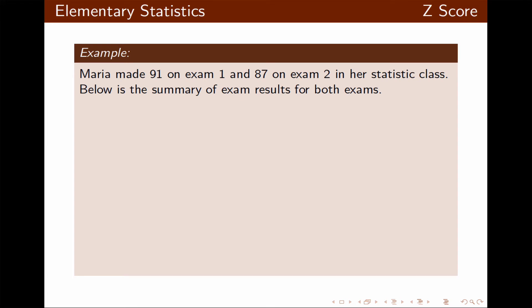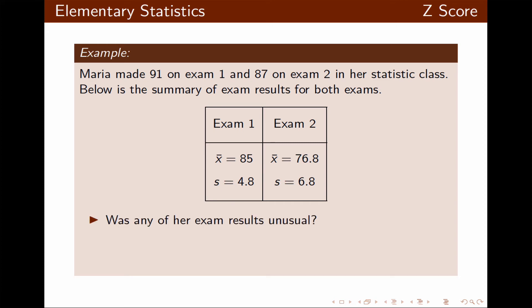Maria made 91 on exam 1 and 87 on exam 2 in her stat class. Below is a summary of exam results for both exams. Exam 1 had a mean of 85 with a standard deviation of 4.8, and exam 2 had a mean of 76.8 with a standard deviation of 6.8. Was any of her exam results unusual? And what exam did she do better relative to the rest of the scores?